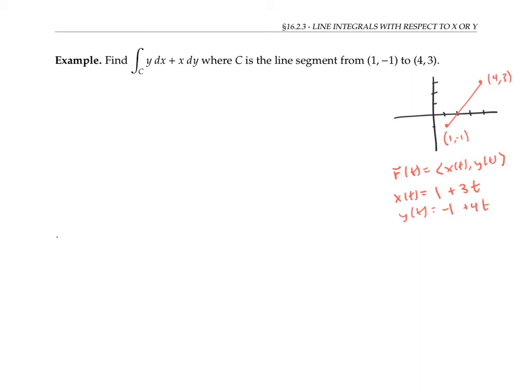One convenient thing about this parameterization is that t is going to range between 0 and 1. Notice that when t is 0, I'm at this initial point where x is 1, y is negative 1. And when t is 1, I've gone all the way to the end, where x is 4 and y is 3.